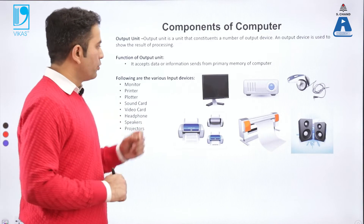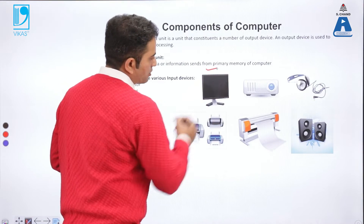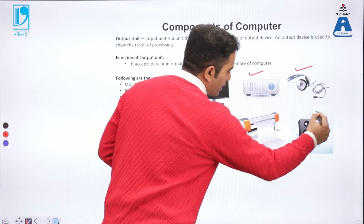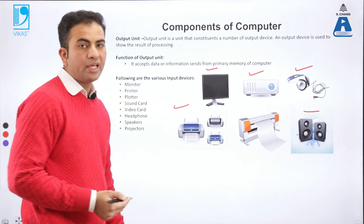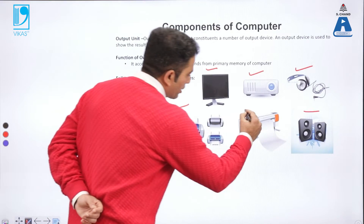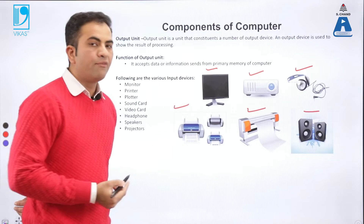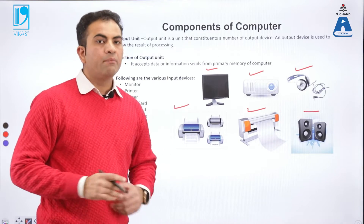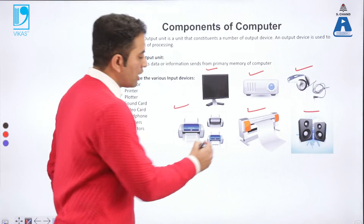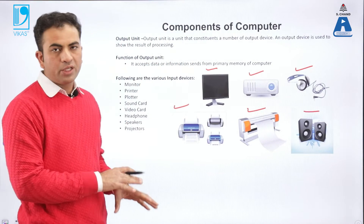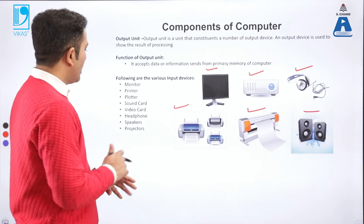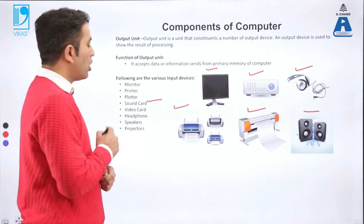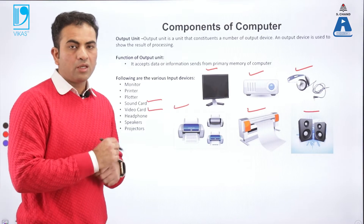Our next component is the output unit. Output units include monitors, projectors, speakers, headphones, and printers — from which we get output. Plotters are used in big printing houses to print large images and pictures. Sound card is also an output device as it gives output in terms of sound, and video card is also an output device.